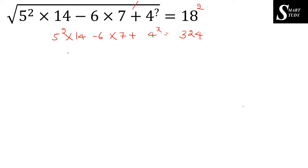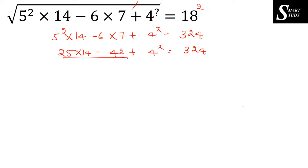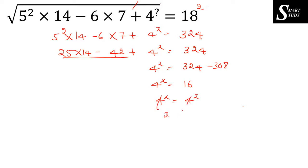So 25 into 14: 25 into 10 is 250, and 25 into 4 is 100, giving 350. Then 350 minus 42 is 308. Transferring 308 to the other side: 4 to the power x equals 324 minus 308, which is 16. Since 16 is 4 squared, we get 4 to the power x equals 4 squared, so x equals 2 is the answer.